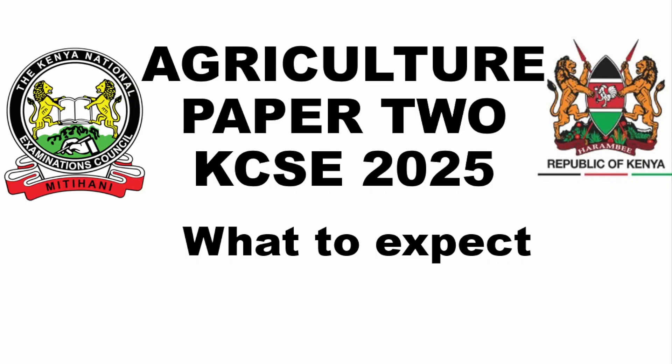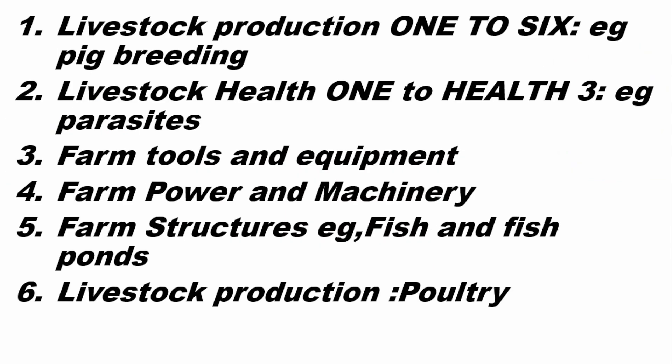Hello guys, welcome back to the channel. Today we are looking at Agri Kacha Paper 2 KCIC 2025 — what to expect. You should have already covered the following topics: livestock production one up to six, livestock health one, two, up to health three, farm tools and equipment, farm power and machinery, and farm structures such as fish ponds, as well as livestock production — for example, poultry production.